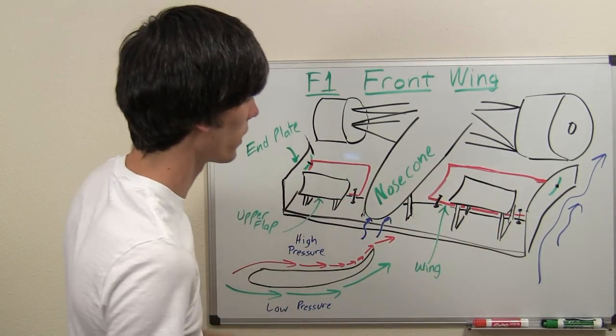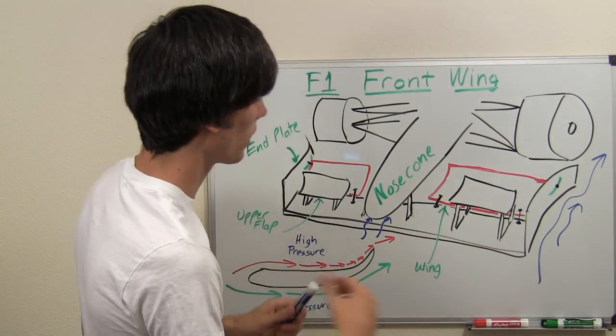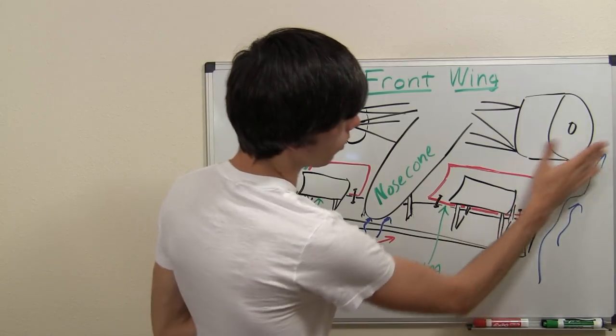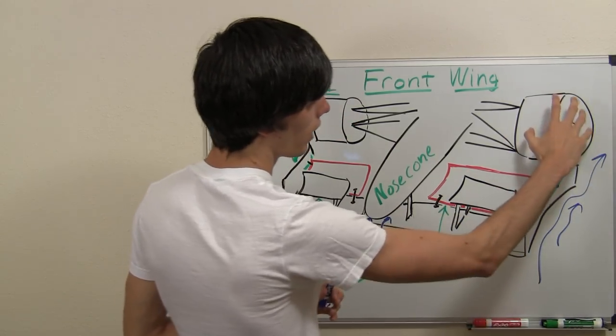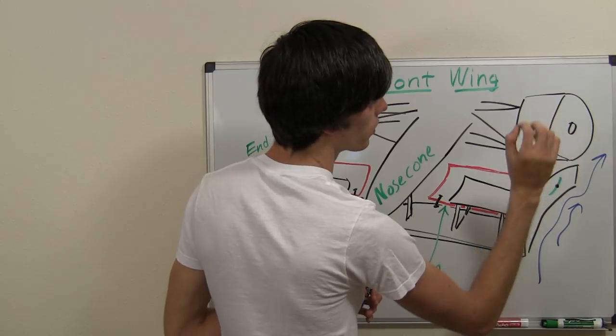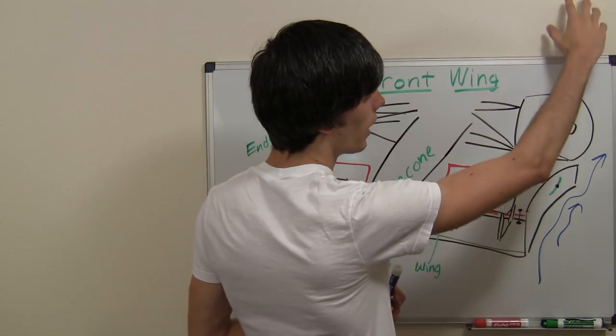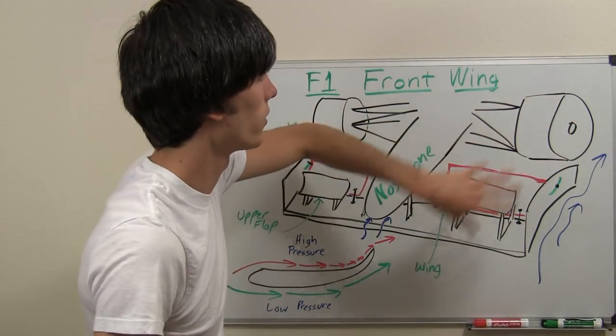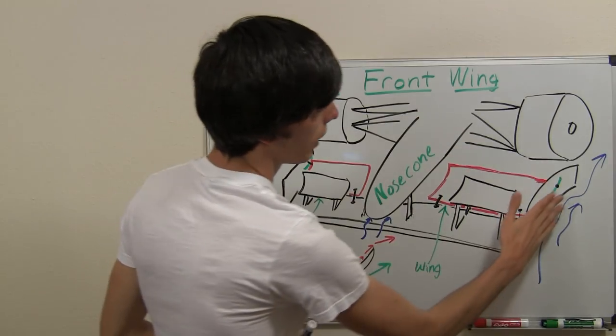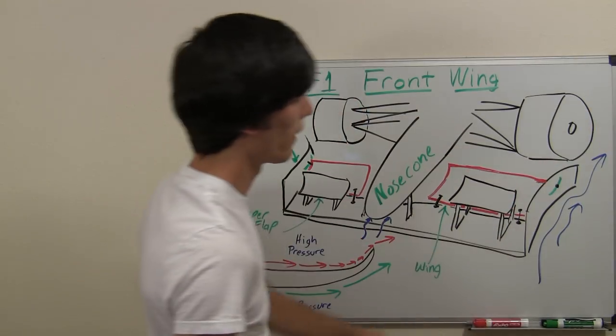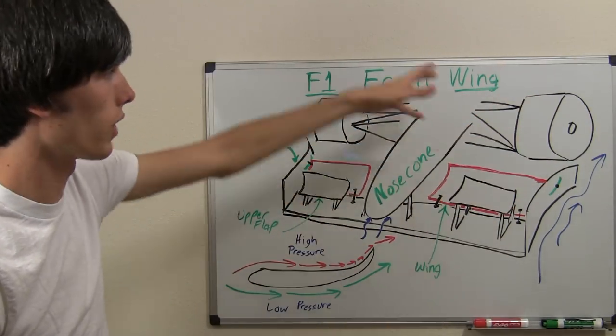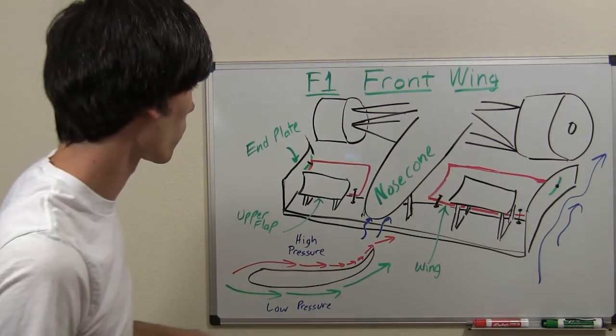Now we've got these end plates here, and the purpose is to get the air to flow around the tires. You don't want air hitting these tires because it's just going to become really turbulent and then you won't be able to use it as it passes back. So you want to pass the air around the tires and then you can make use of it later, for example in the side pods of the car.